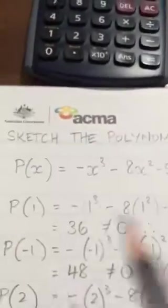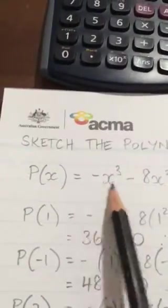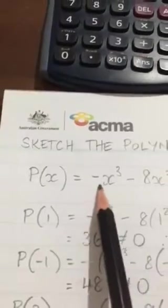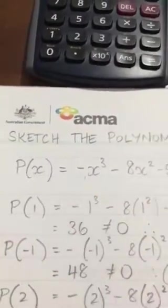Now going back to my original equation, my leading term is negative x cubed. My leading coefficient is a negative 1, so it's a negative, which means I expect my end behavior to be negative.